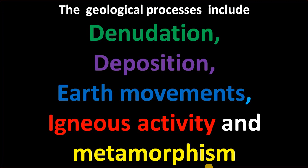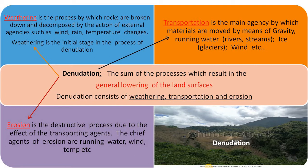What is denudation? Denudation means the sum of processes which result in the general lowering of the land surface — the land surface becomes lower. Denudation consists of three parameters: namely weathering, transportation, and erosion. Weathering is the process by which rocks are broken down and decomposed by the action of external agencies such as wind, rain, temperature, etc. Weathering is the initial stage in the process of denudation.